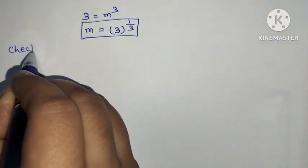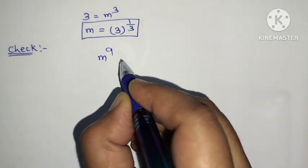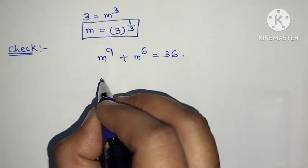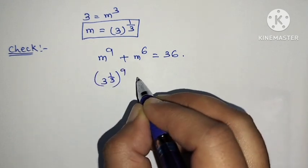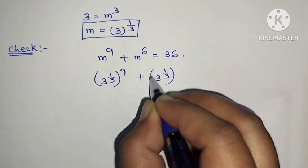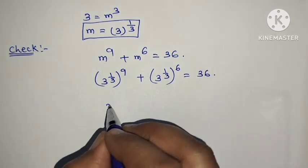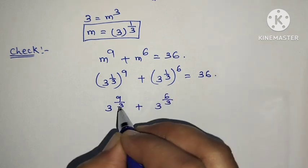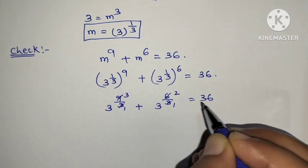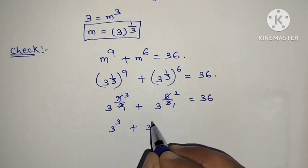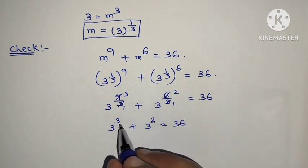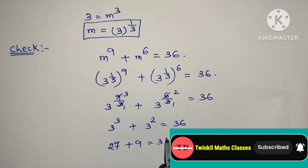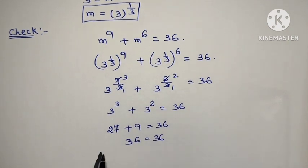Let's check whether the value is correct. The question is: m to the power 9 plus m to the power 6 is equal to 36. We put the value of m here: 3 to the power 1 by 3, whole to the power 9, plus 3 to the power 1 by 3, whole to the power 6, equals 36. Then 3 to the power 9 by 3 plus 3 to the power 6 by 3, which simplifies to 3 to the power 3 plus 3 to the power 2 equals 36. That is 27 plus 9 equals 36. Both LHS and RHS are equal.